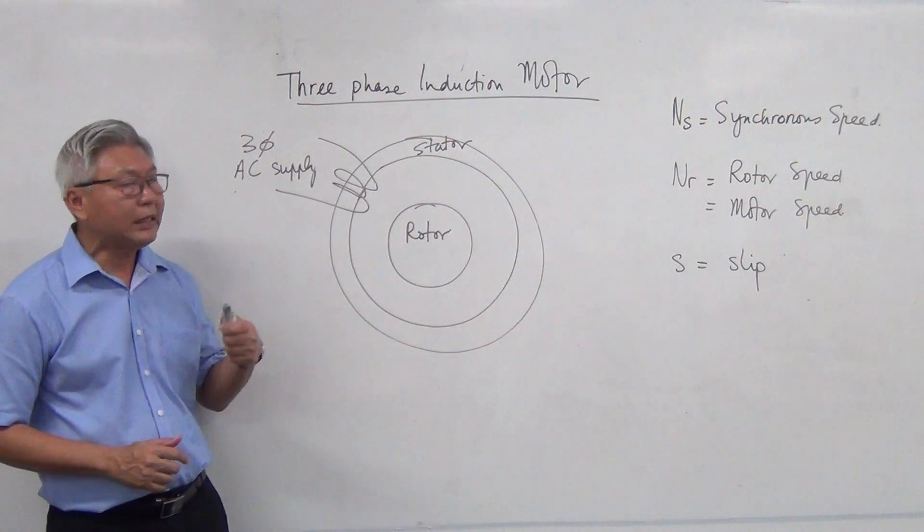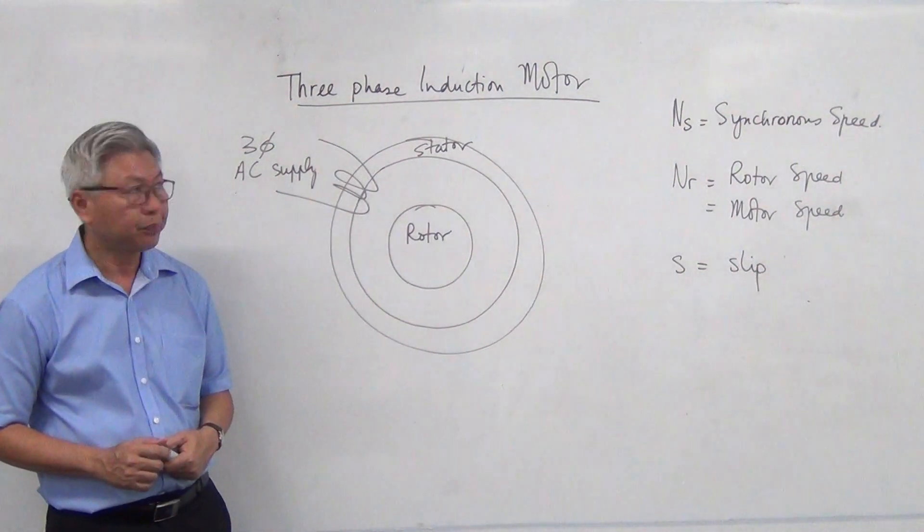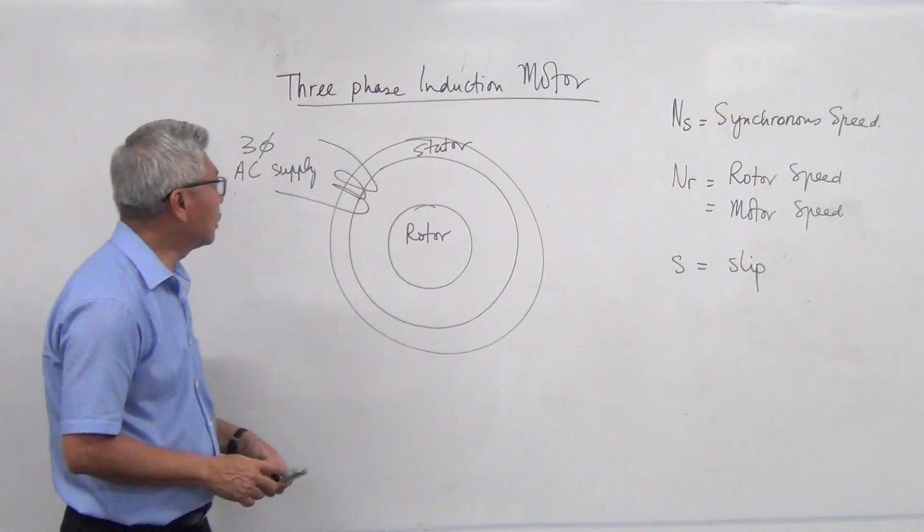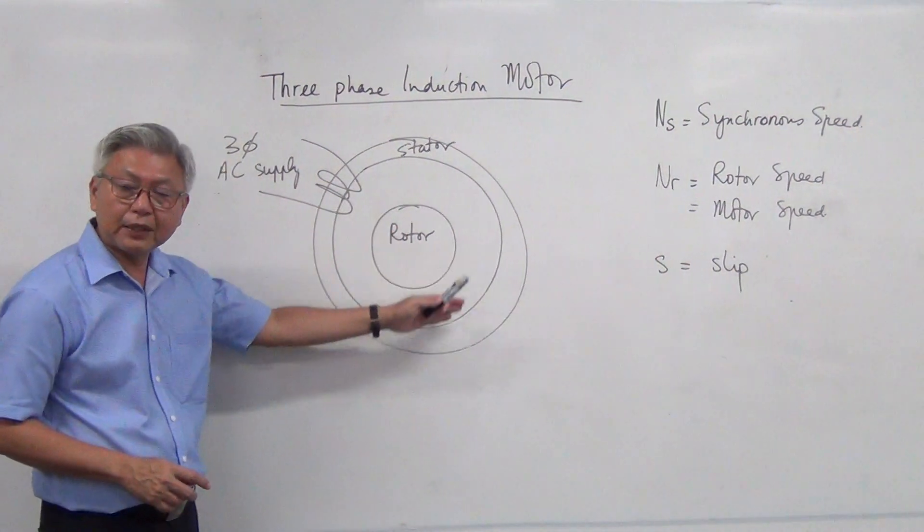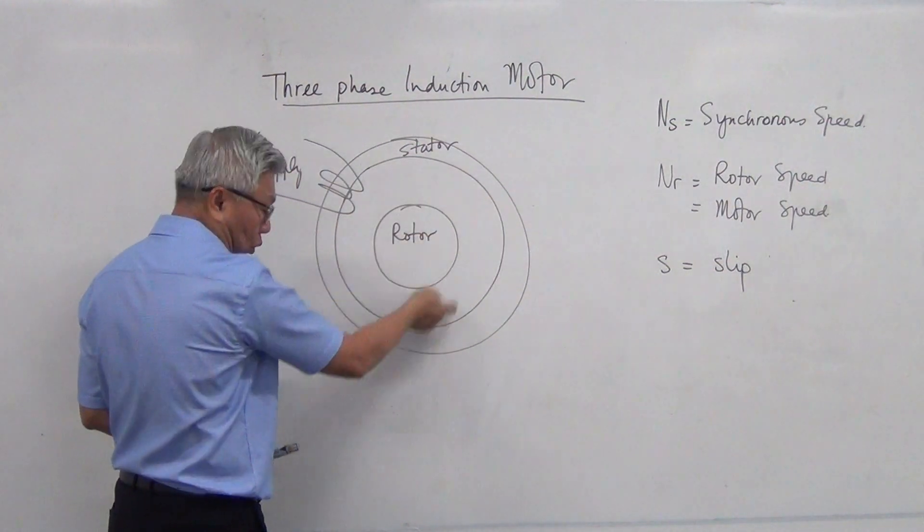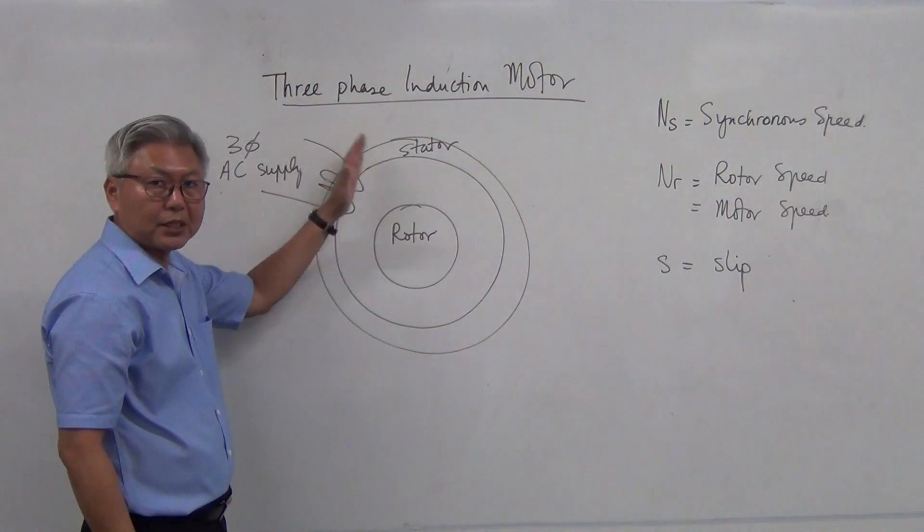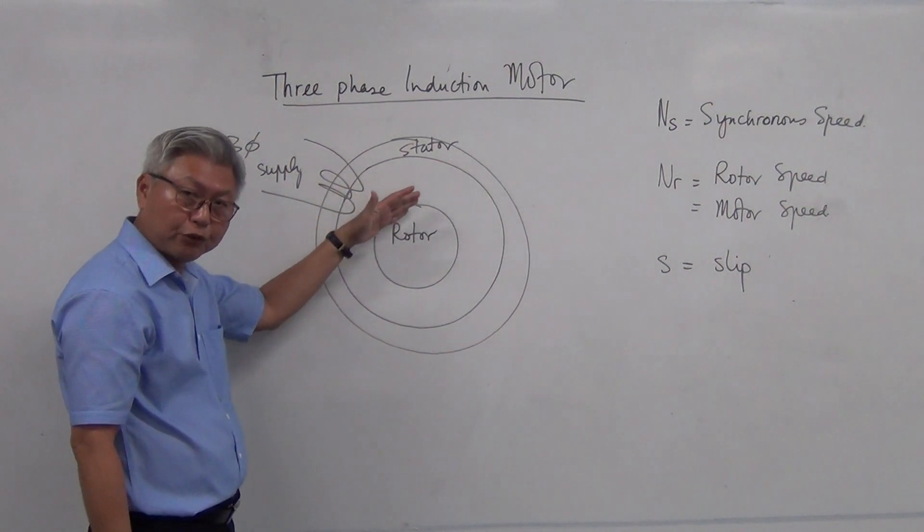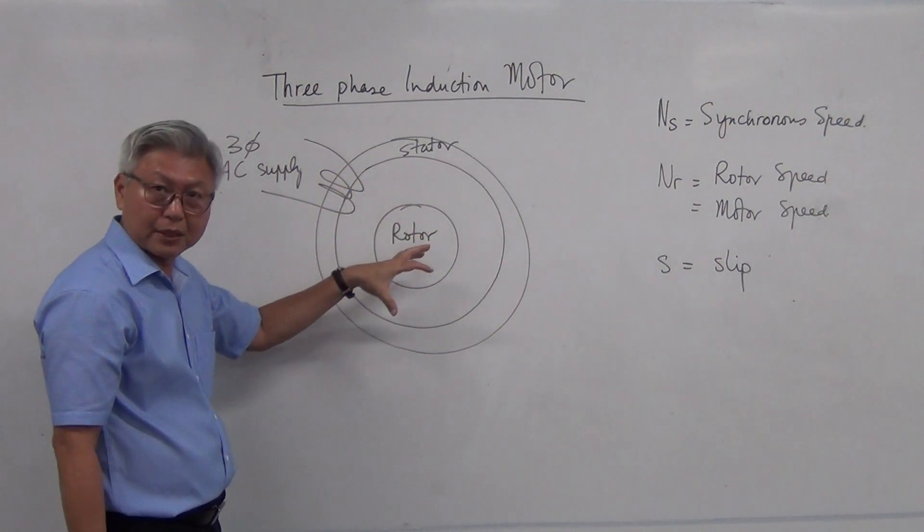Now, what is the working principle behind induction motor? The construction of an induction motor consists of a stator and a rotor. Stator, as the name suggests to you, stays stationary, doesn't move. Rotor is the one that moves.